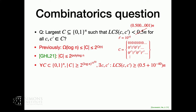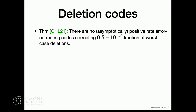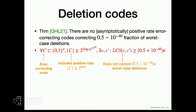This is a combinatorics result, but it also has a deletion code interpretation. The statement is that there are no asymptotically positive rate error-correcting codes correcting a 0.5 minus some delta fraction of worst-case deletions. C, as the notation might suggest, is an error-correcting code. For any error-correcting code that is this size — which includes all positive rate codes — we have this condition, which is equivalent to saying that it doesn't correct that many worst-case deletions.